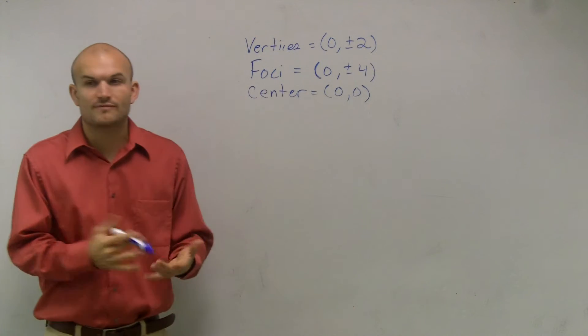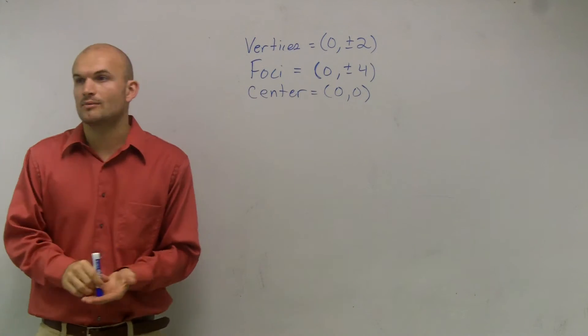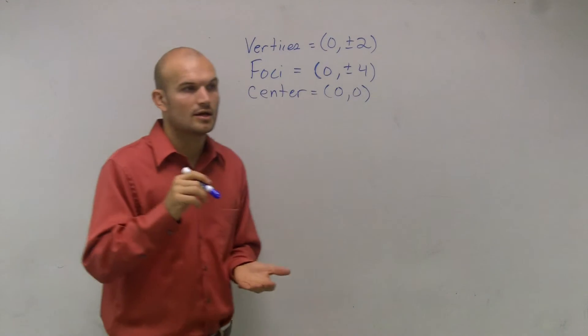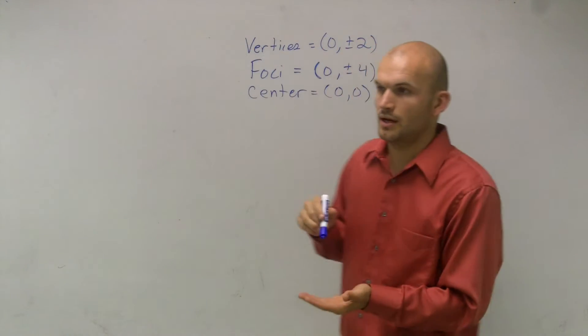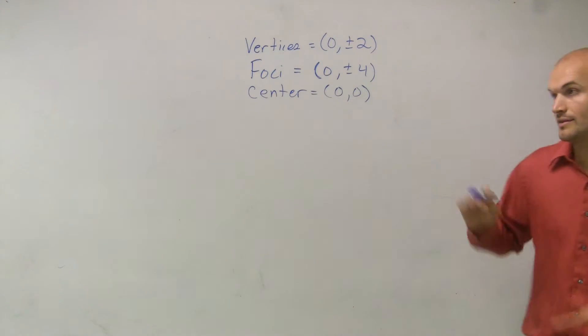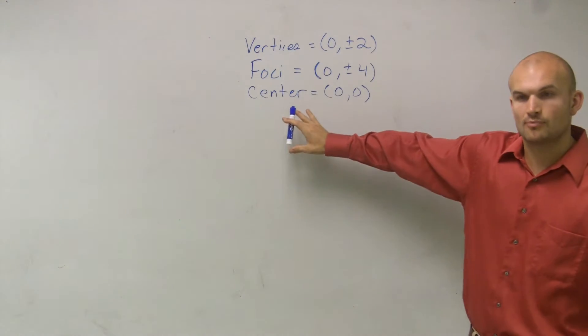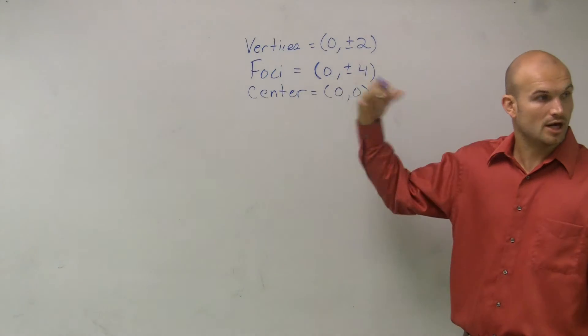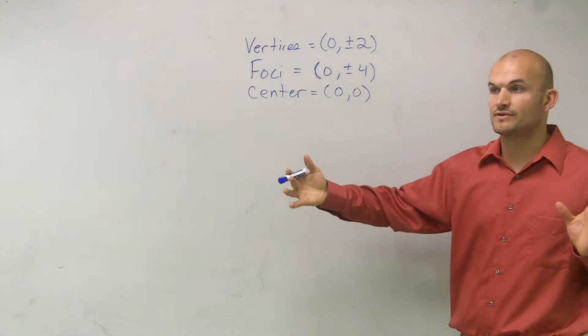When doing that, what we first need to determine is everything we've been talking about with conics. We need to determine if we're going to have a vertical or horizontal orientation. For a parabola, it would determine does it open up or down or left and right.